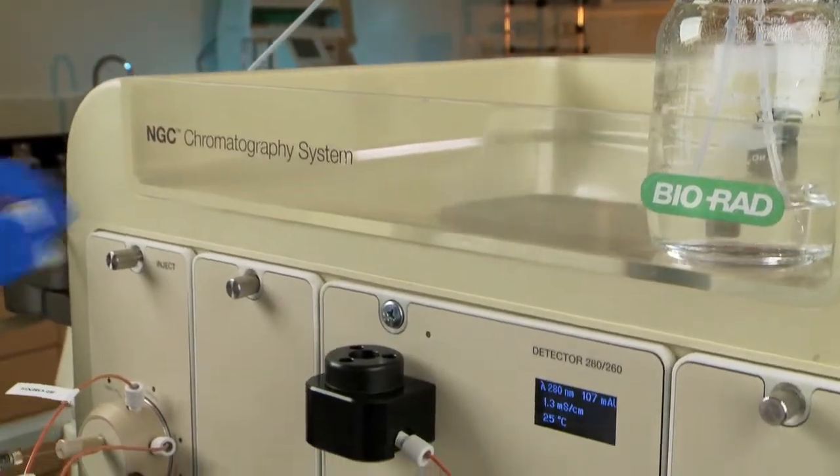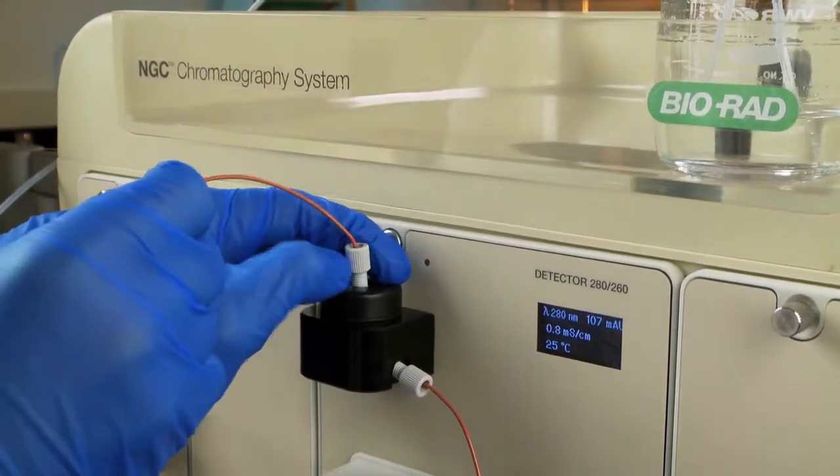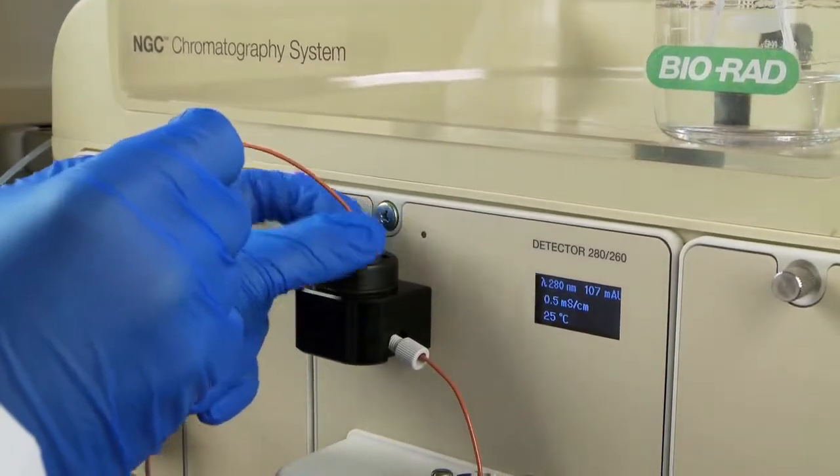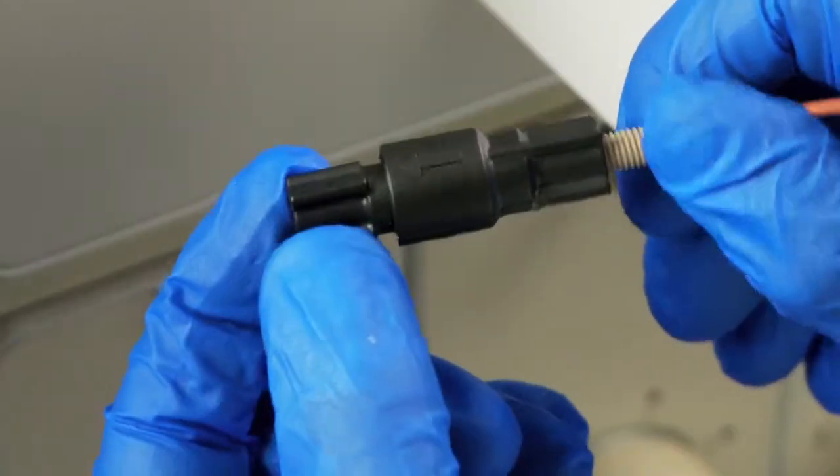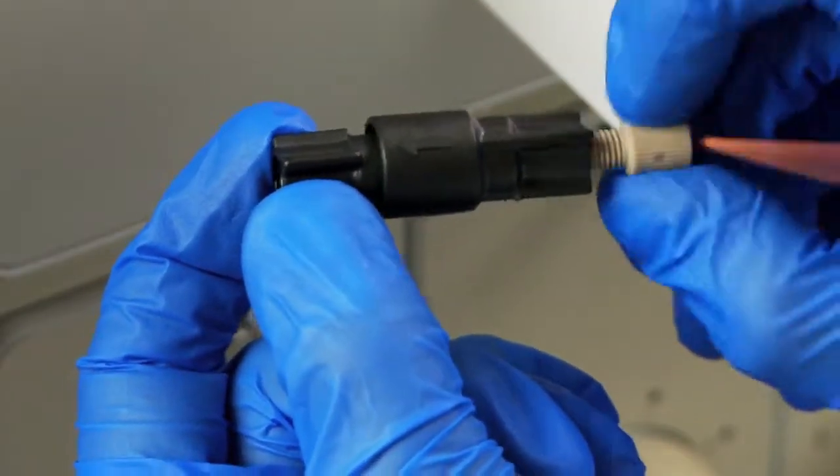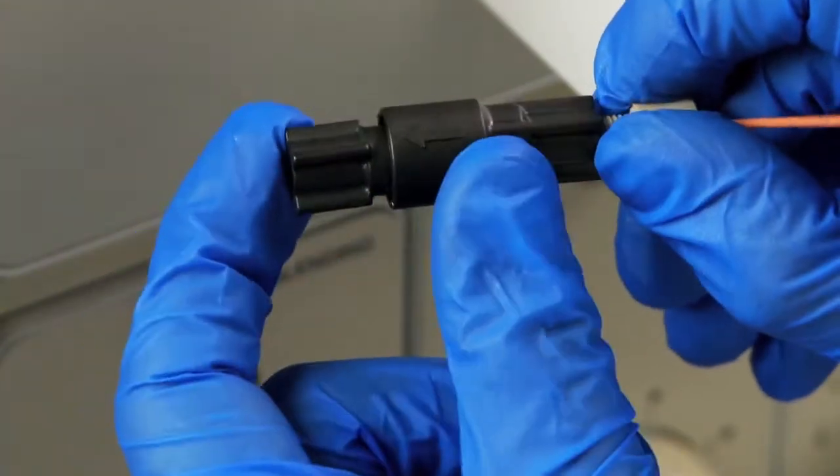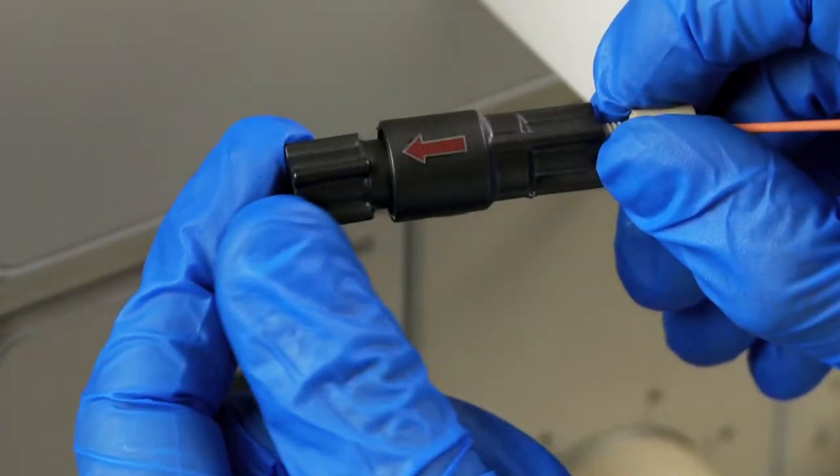Now you will attach the back pressure regulator. Connect line number 2 into the top of the conductivity monitor and then connect the other end into the 40 PSI back pressure regulator. The arrow on the body of the regulator should point in the direction of flow.